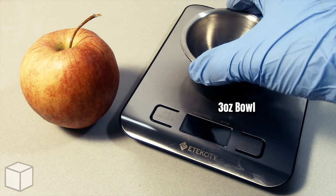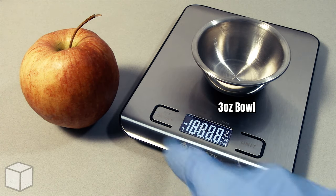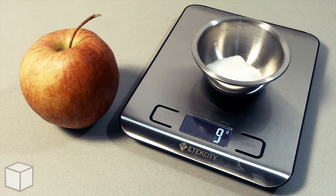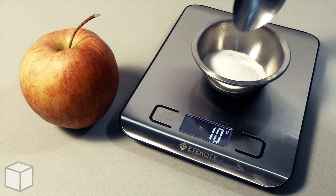To provide a visual of what that looks like with a food scale, I'm going to add granulated sugar into this small 3 ounce bowl until the total amount equals 19 grams.